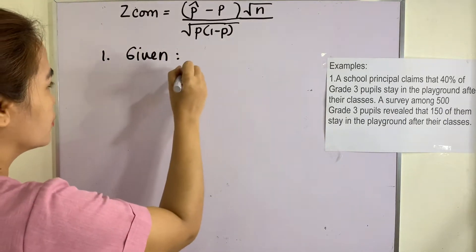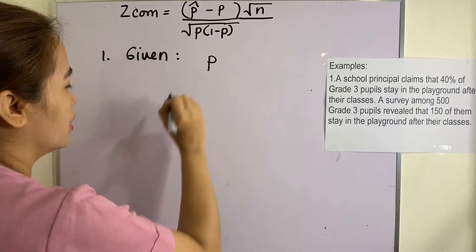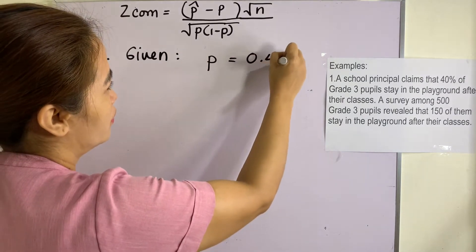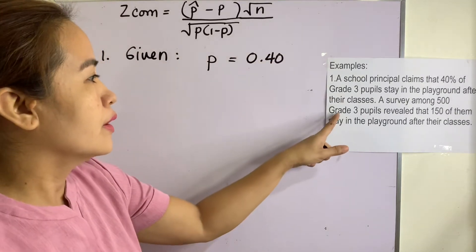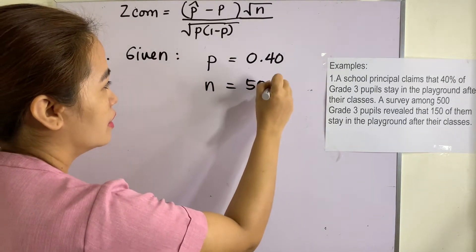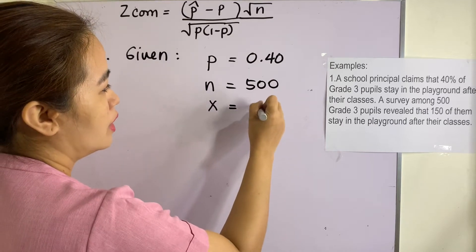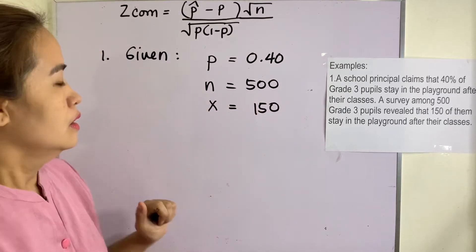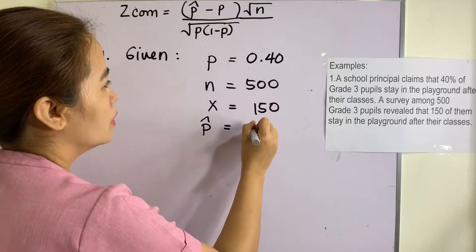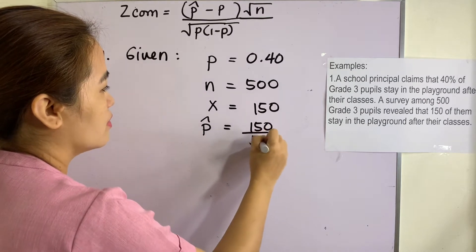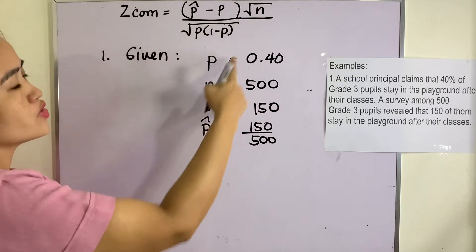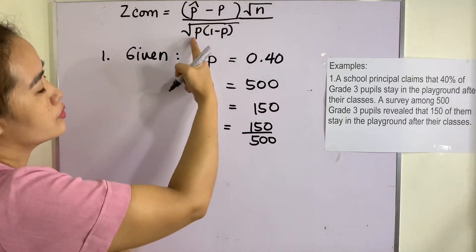Let us identify the given first. The hypothesized population proportion p is 0.40 or 40%. Our n is 500 and our x is 150. Therefore, p-hat is equivalent to 150 divided by 500.